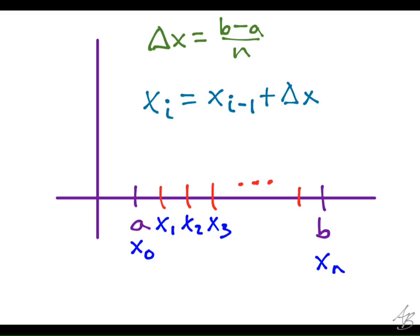All right, so this is just a little terminology here. First of all, I want to make sure that you understand that A and X sub 0 are going to be the same thing. B and X sub N are going to be the same thing. You should know how to find delta X. And you should be able to find each of the X values by just adding on delta X over and over again. So if you start at A, add delta X, you get X sub 1. Then you add delta X again, you get X sub 2, and so on.